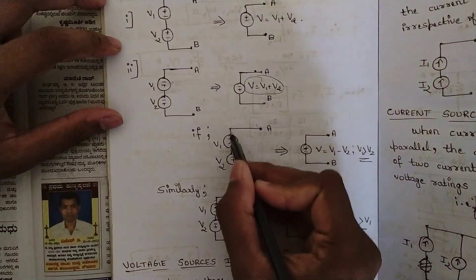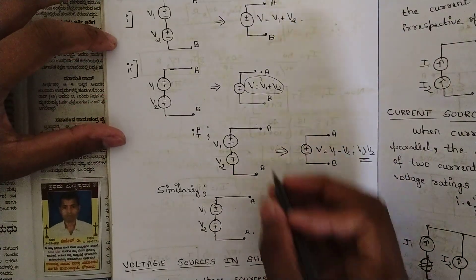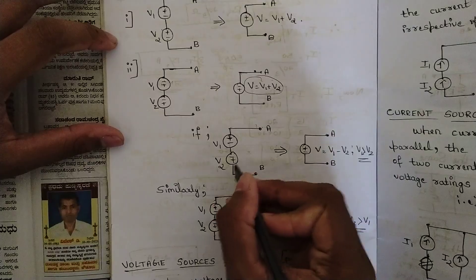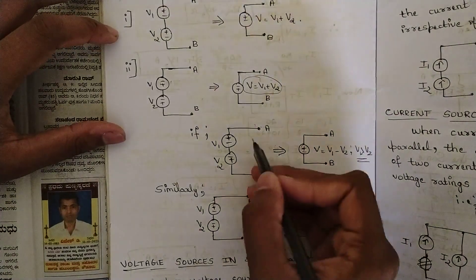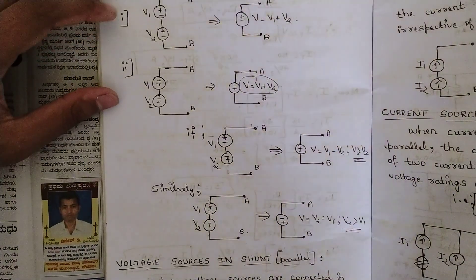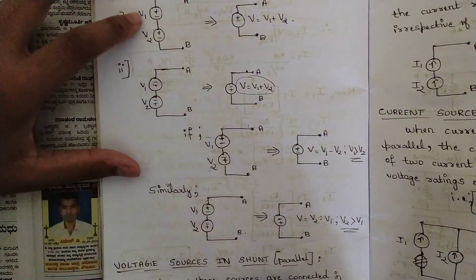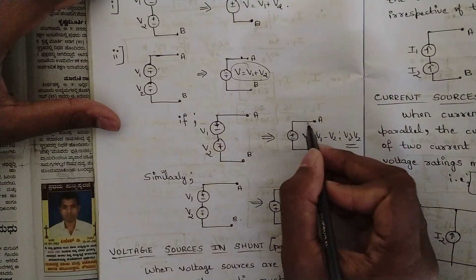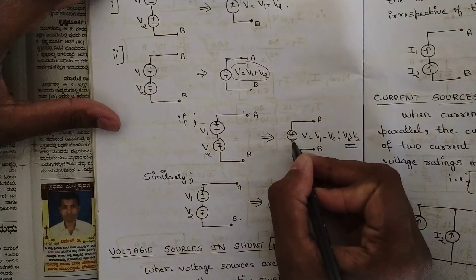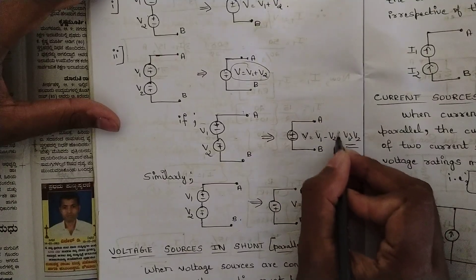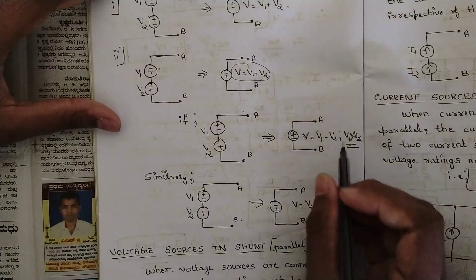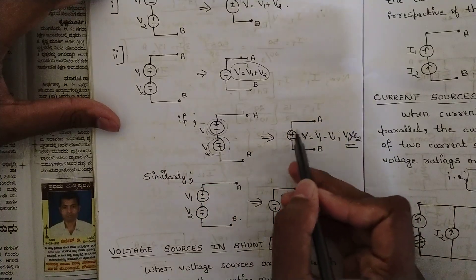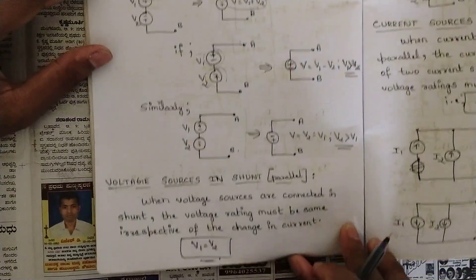When voltage sources are connected in series and the polarities are different — one is plus-minus and the other is minus-plus — you should be subtracting the two voltage sources. When two voltage sources have the same polarities, add them; when they have different polarities, subtract them. So V = V1 − V2, with the condition that V1 is greater than V2. The polarity of the reduced source follows whichever source is larger.